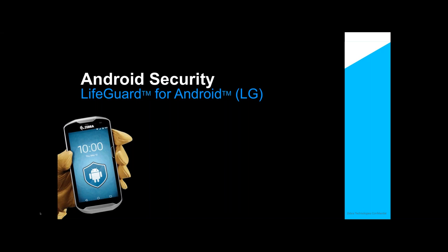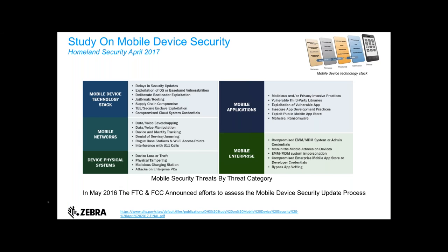Another aspect we have to think about is security. In just about every conversation, there are still factions that feel Android has inherent risks around security. It was true early on — it was open and easy to access. Now it's a different world, but in that different world we have to think about the mobile device itself. The whole aspect around security has changed drastically over the last three years. In fact, the Department of Homeland Security published a report on mobile devices back in 2017.